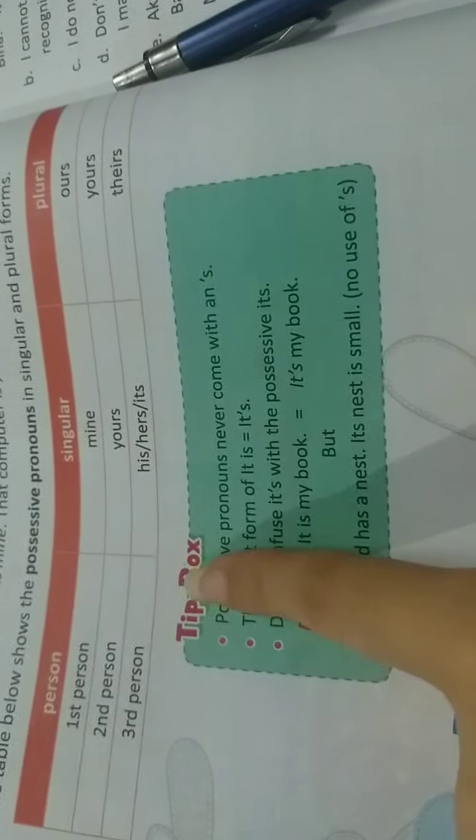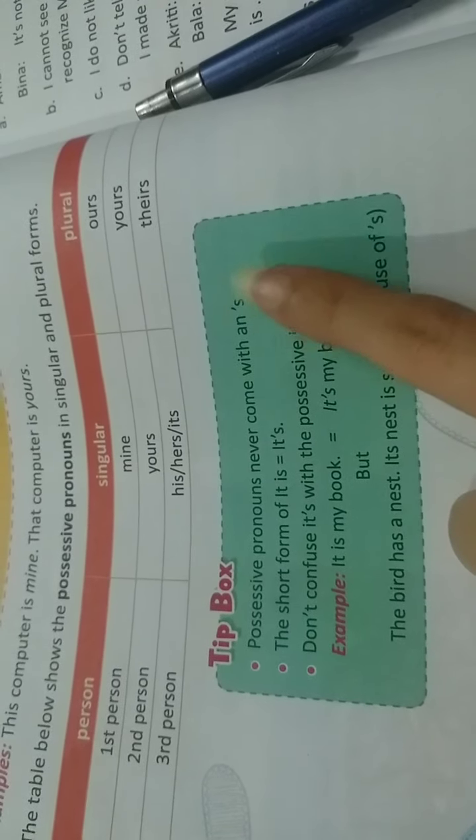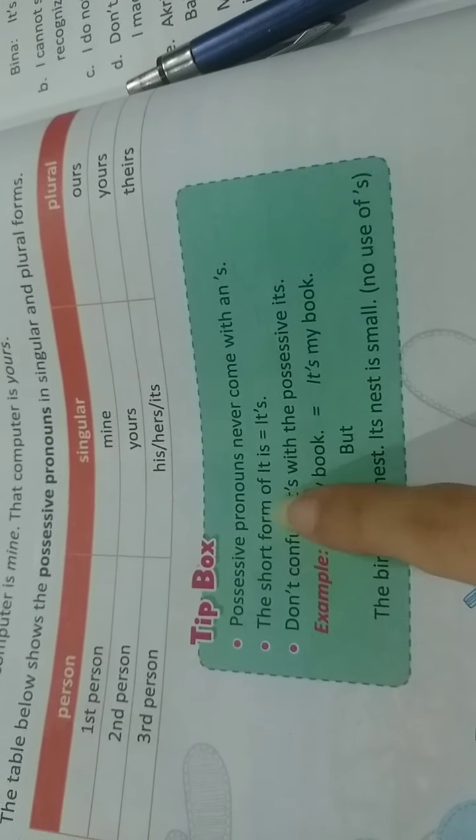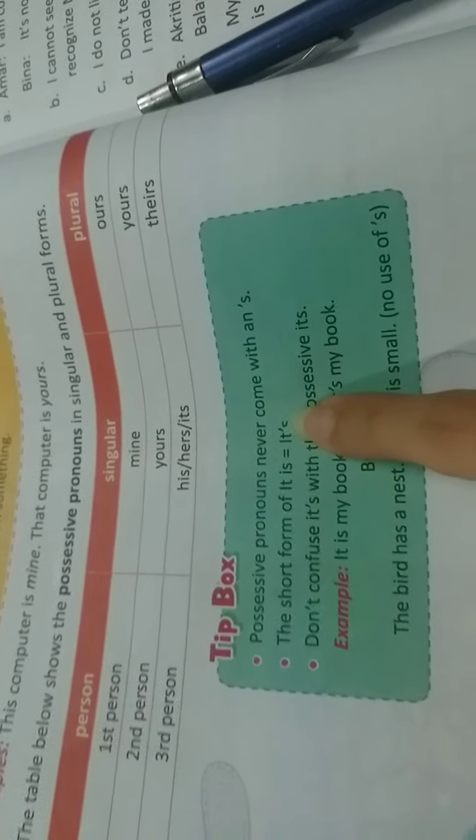Now, here are some tips given that you have to keep in mind. First is, possessive pronouns never come with an apostrophe s. That means you can never use an apostrophe s with a possessive pronoun. Second is, the short form of it is, is it's with an apostrophe s.